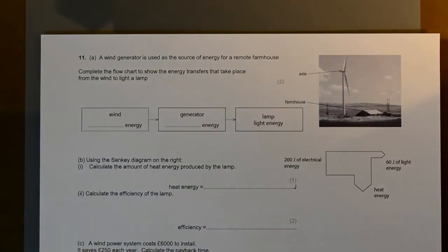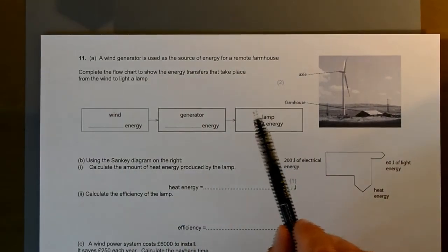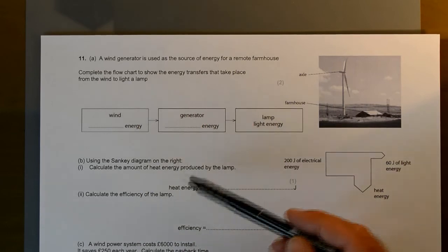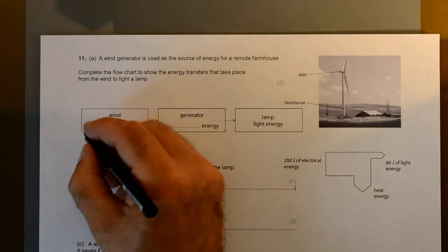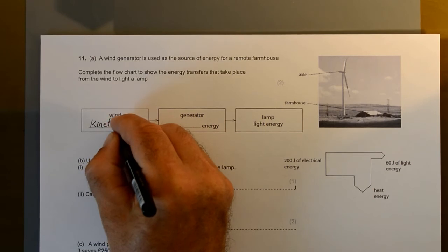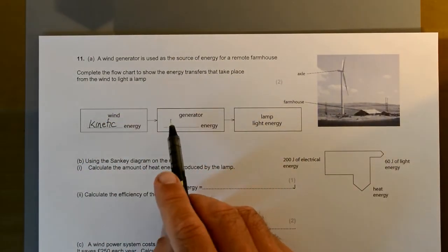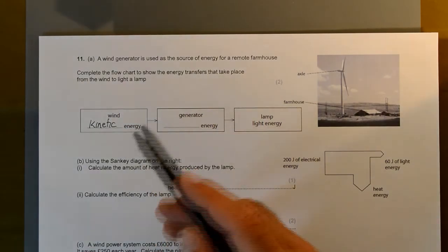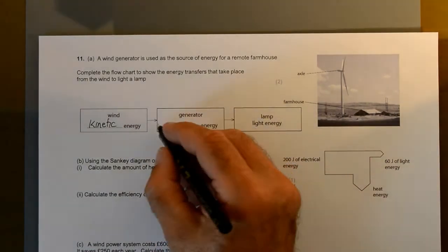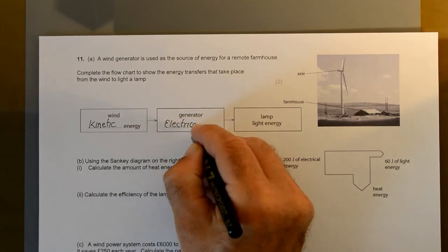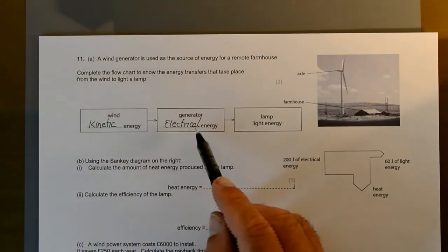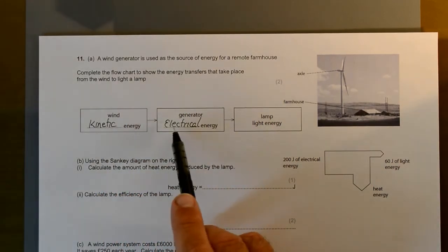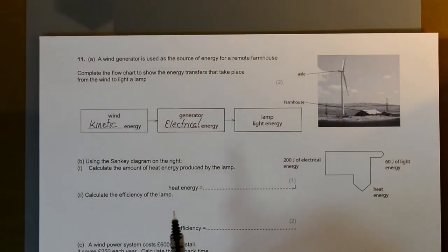Question 11: A wind generator is used as a source of energy for a remote farmhouse. Complete the flow diagram. The wind is moving, so the type of energy is kinetic. That makes the generator. Do you think the generator is turning the movement energy into electrical energy? So this is probably electrical. The generator is spinning. That's a difficult one. Kinetic energy, definitely. Electrical energy, probably. And then lights them.